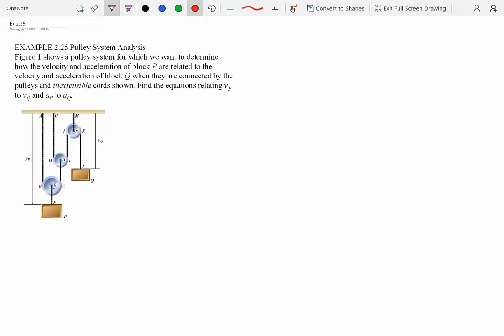So how do we solve this problem? Well, let's first read the question. So the figure shows the pulley system for which we want to determine how the velocity and acceleration of block P are related to the velocity and acceleration of block Q when they are connected by pulleys and inextensible cords shown. Find the equations relating VP to VQ and AP to AQ.